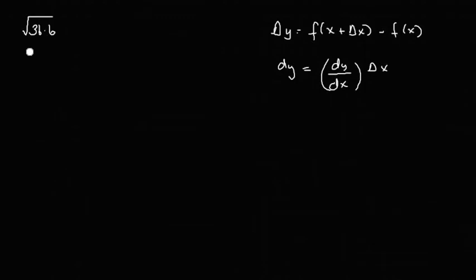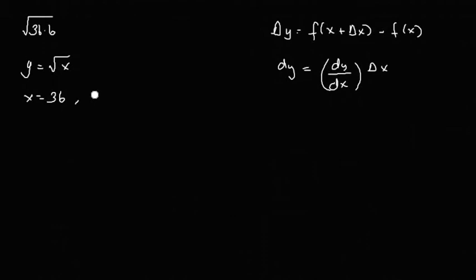Since we have a root function, we assume y equals root x, so f of x equals root x. We have the value 36 with an increment of 0.6. So x equals 36 and Δx equals 0.6.